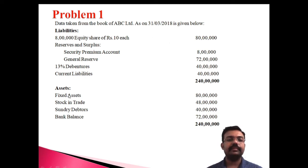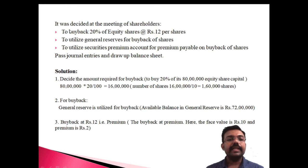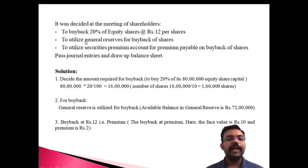In the meeting of shareholders it was decided: first, to buy back 20% of the equity shares at rupees 12 per share; second, to utilize general reserve for the purpose of the buyback; and third, to utilize the security premium account for the premium payable on buyback of shares. Prepare the journal entries and draw the balance sheet.